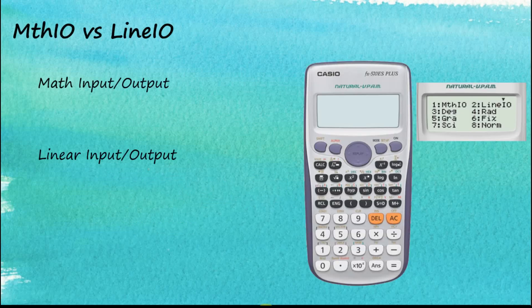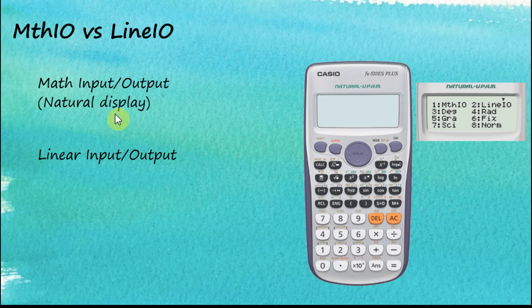Max IO versus Line IO. If you go to the setup menus by tapping Shift Setup, you are going to see this screen, and the very first two options on the screen are the Max IO and the Line IO. The Max IO, or max input output, is also called the natural display, whereas the Line IO, or line input output, is called the linear display. In this video, I'm going to discuss the rules we use in these two methods of input to perform calculations.